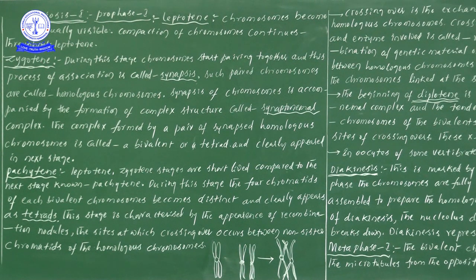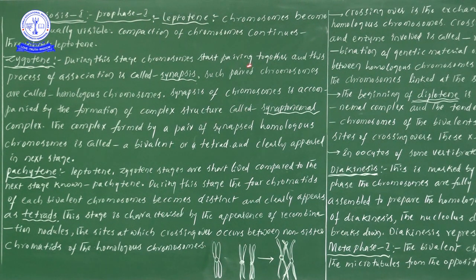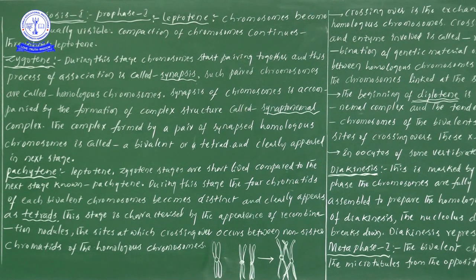Next is Zygotene. During this particular stage, chromosomes start pairing together. For example, in a human being we have 46 chromosomes — when we apply this statement, it comes as 23 pairs. Two chromosomes come together and form a pair. During Zygotene, chromosomes start pairing together, so 46 chromosomes become 23 pairs. This particular process of association is known as Synapsis.